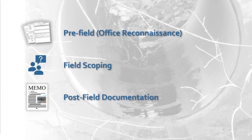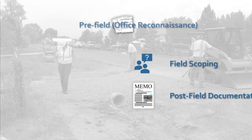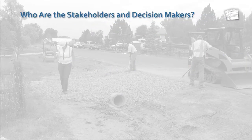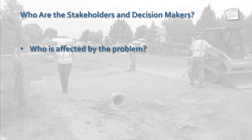You'll want to go check out the problem in the field, but you should start your investigation before going into the field — that will help you make the most of your time in the field. The first step when a maintenance or damage issue arises is to determine the stakeholders and decision makers. Identifying who is affected by the issue is important. This may be the initiator that reported the issue to you, and that could be maintenance staff, a local municipality, or even a landowner.